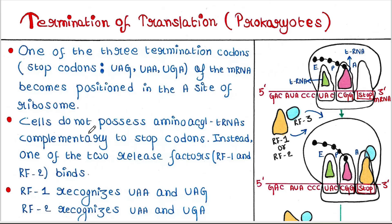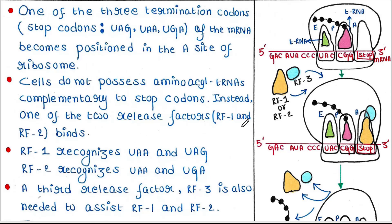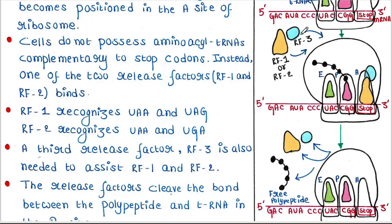Cells do not possess any aminoacyl-tRNAs that are complementary to stop codons. Instead, one of two release factors binds. There are two release factors: RF1 and RF2. RF1 recognizes UAA and UAG codons, and RF2 recognizes UAA and UGA codons. So one of them will bind based on the stop codon. A third release factor, RF3, will also come to assist RF1 and RF2.